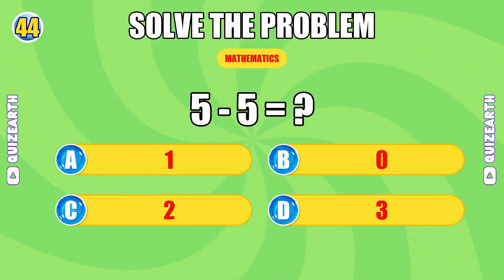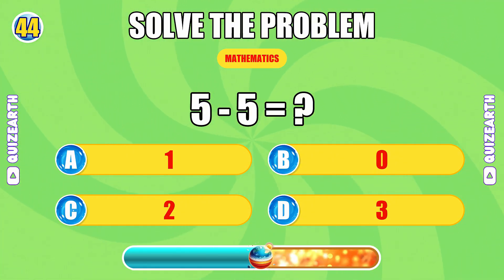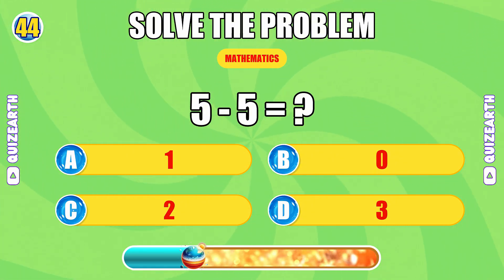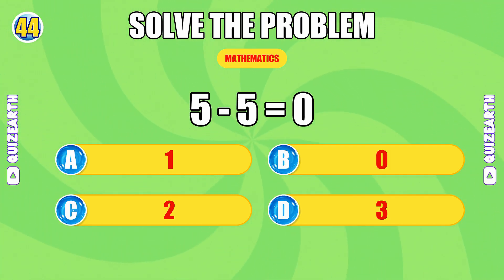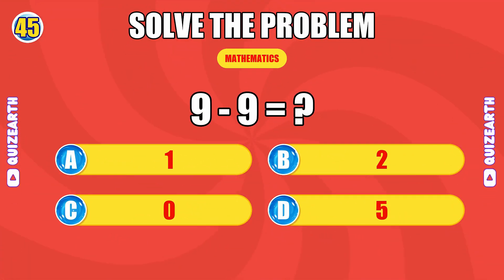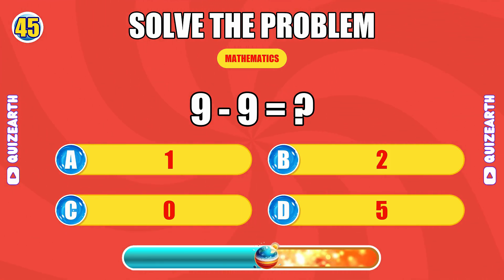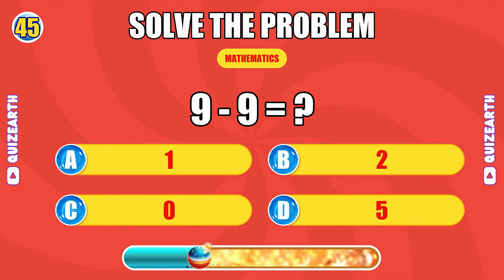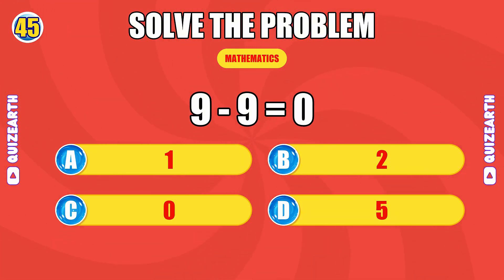How much is five minus five? What do you get when you subtract nine from nine? Sharp as ever — the answer is zero. Superb execution — the answer is zero.